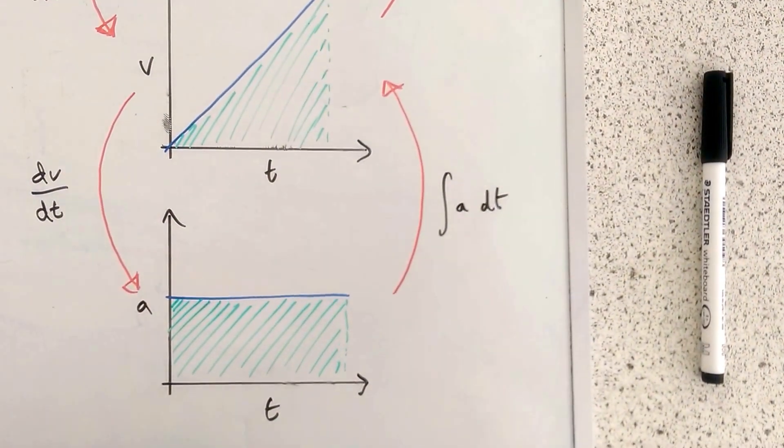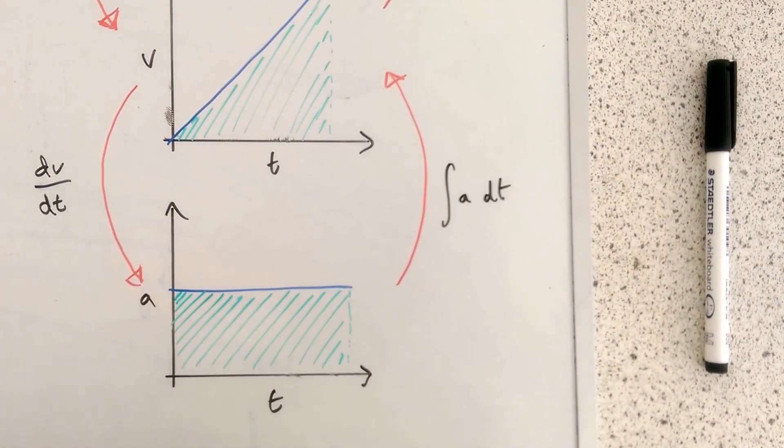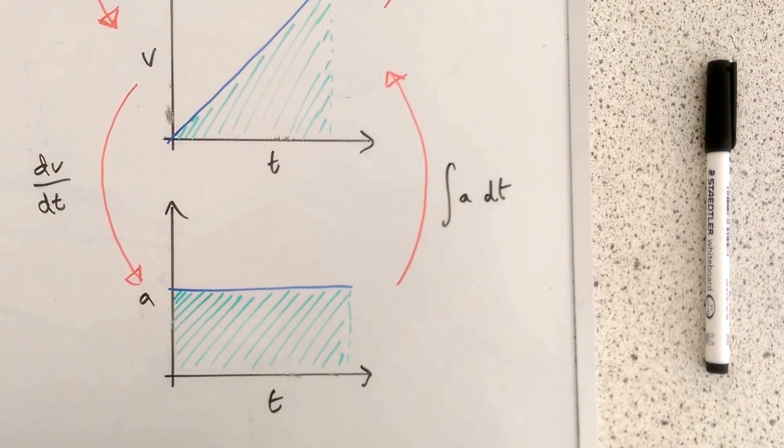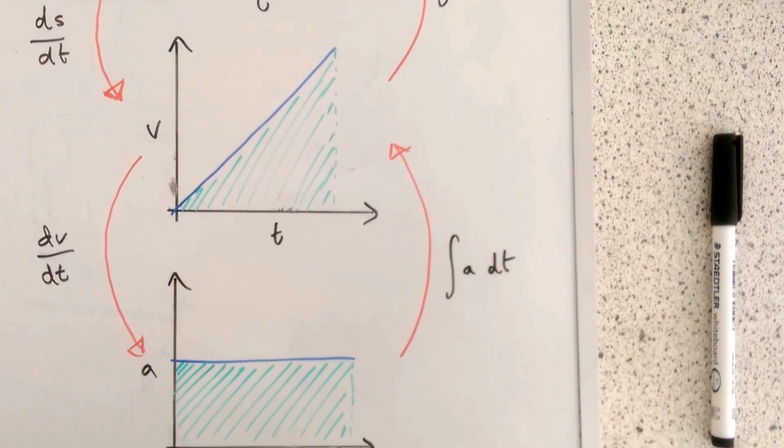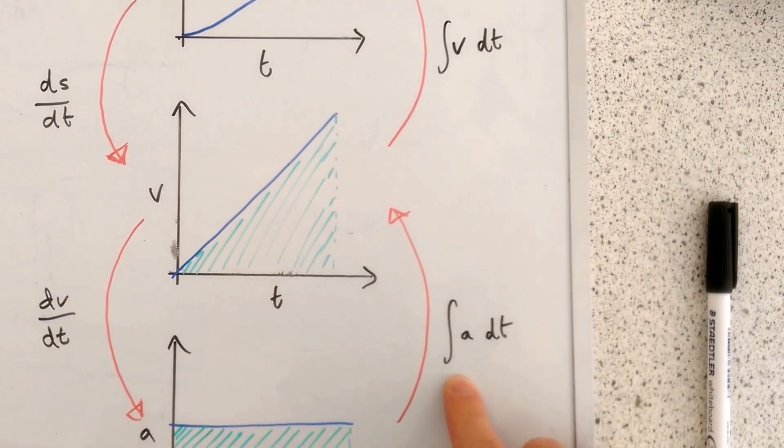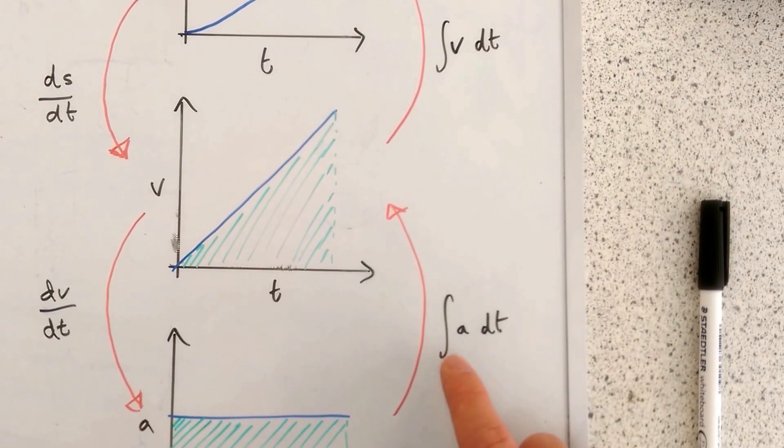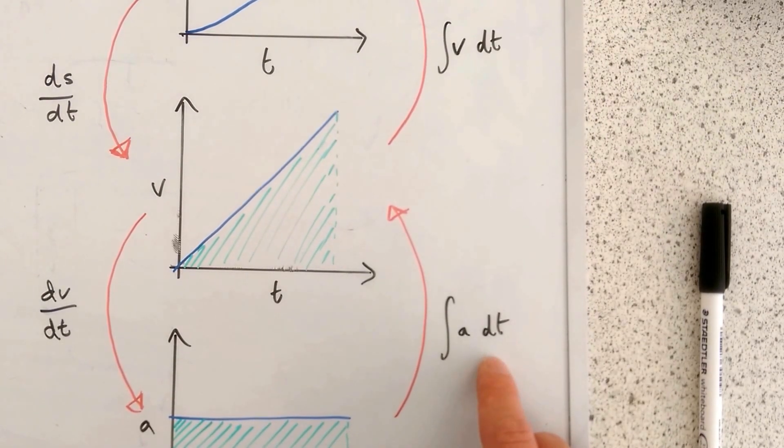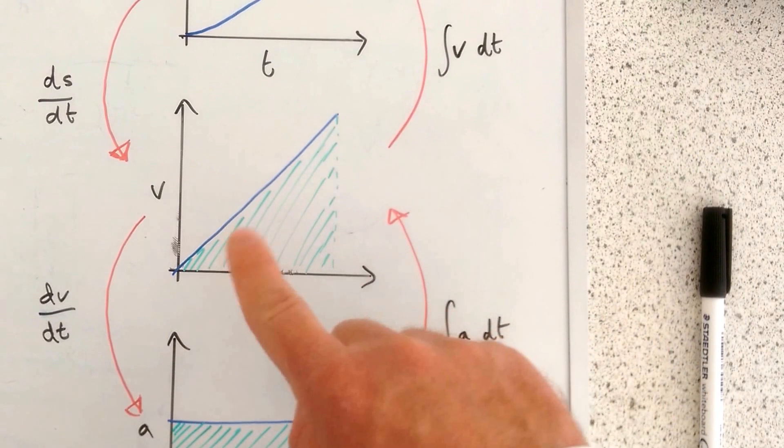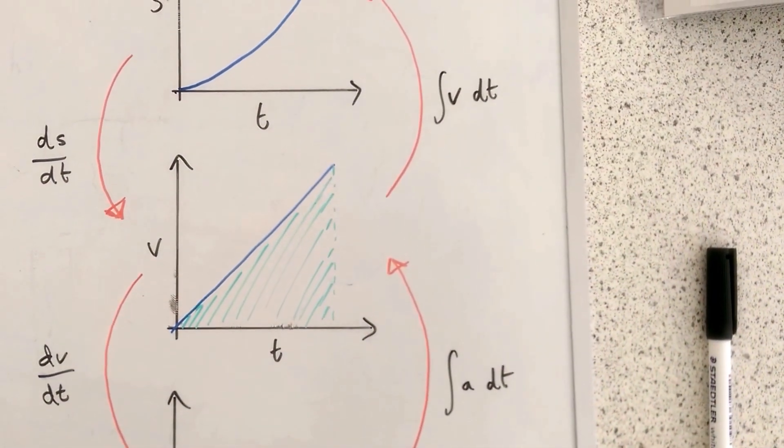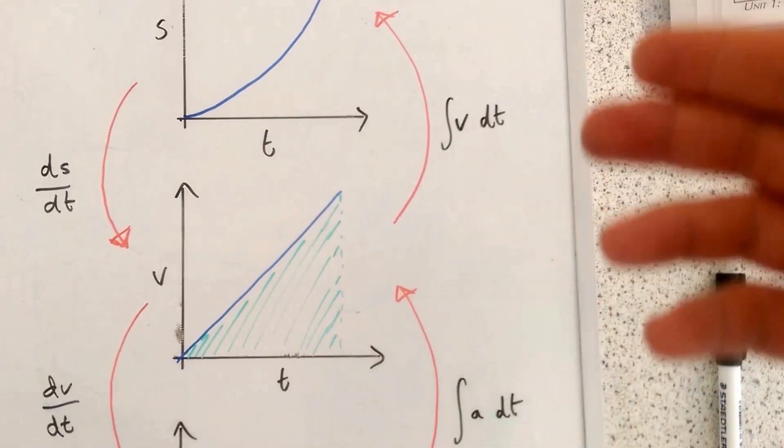And we can actually go back up the way by working out the areas under. The area under an acceleration time graph is going to give you the average velocity. So this bit of notation is the integral that you'll know from A-level maths. If you've started that, the integral of the function a with respect to t is going to give you the velocity.